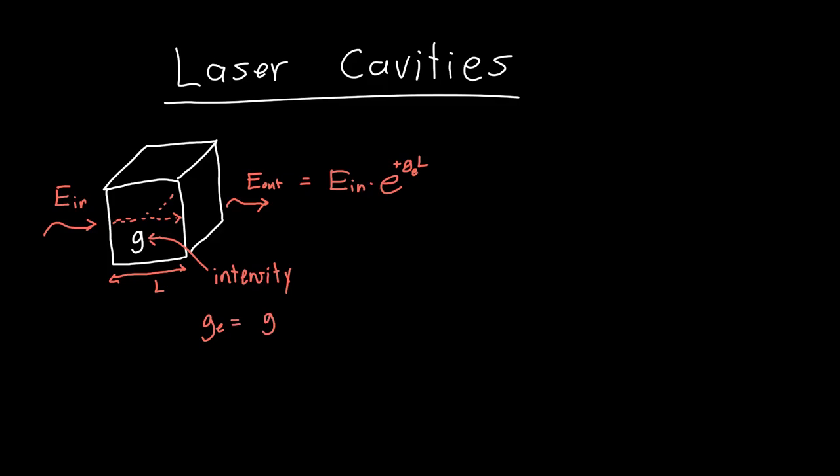I'm going to use G_E here, and this is just the gain divided by two. Similarly you can calculate the output optical intensity, it's just the input intensity times E to the plus G L or two G_E L. The intensity is related to the field by a square, and that's not bad right, we have more intensity than we had before.